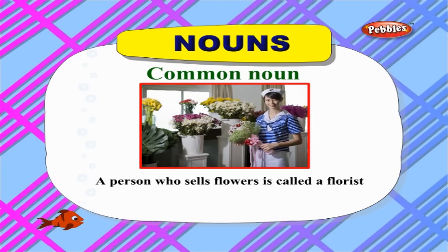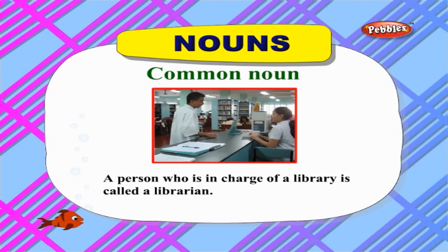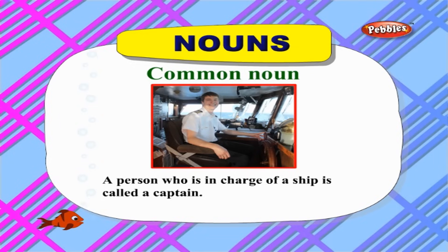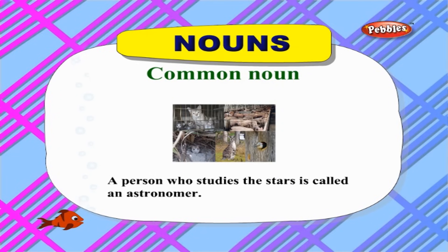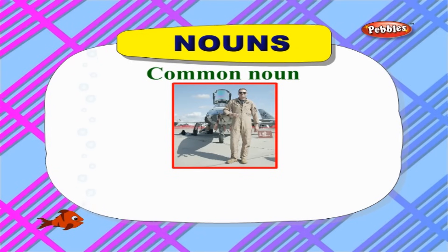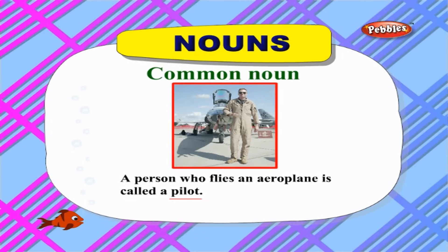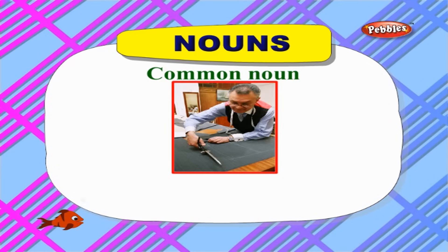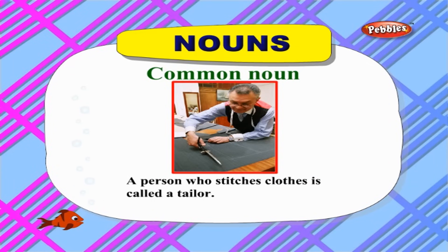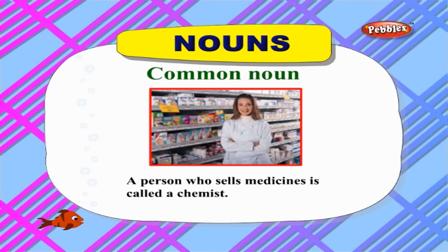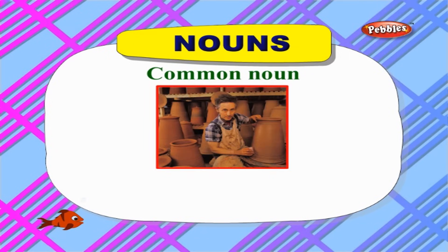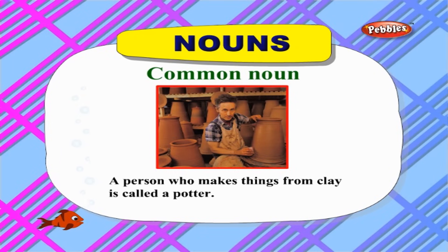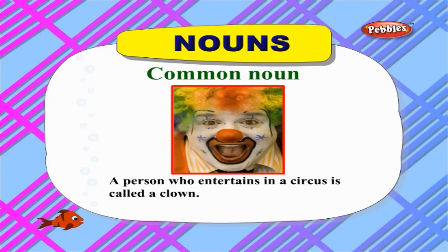A person who sells flowers is called a florist. A person who is in charge of a library is called a librarian. A person who is in charge of a ship is called a captain. A person who studies the stars is called an astronomer. A person who flies an aeroplane is called a pilot. A person who writes books is called an author. A person who stitches clothes is called a tailor.